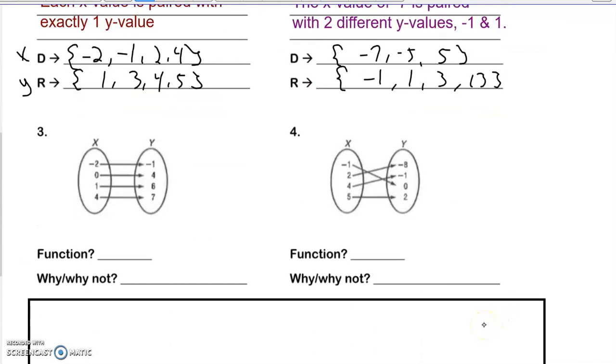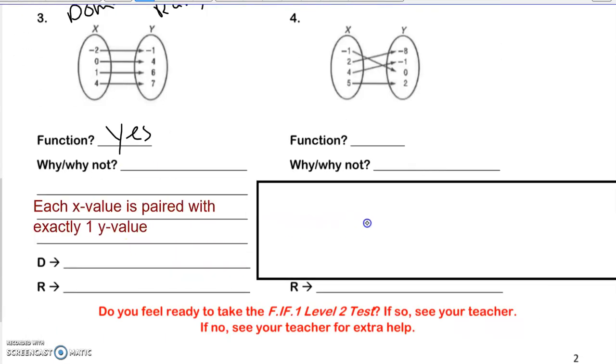Taking a look at the next one in mapping. It's the same thing. The first oval is always my x or my domain. And my second oval is always my range. So I'm going to notice that all the x values are coming off differently. So yes, this one is definitely a function. So each x value is paired exactly with one y value. We're going to put them in order from least to greatest, which is already done. So we just kind of have to copy that down. And the same thing for the range or the y values. We're going to put them in order from least to greatest.